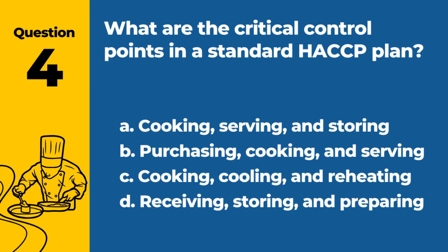Question 4. What are the critical control points in a standard HACCP plan? A. Cooking, serving, and storing. B. Purchasing, cooking, and serving. C. Cooking, cooling, and reheating. D. Receiving, storing, and preparing. Answer: D. Receiving, storing, and preparing. Critical control points in a HACCP plan typically include receiving, storing, and preparing food.